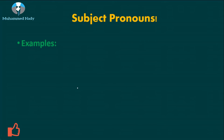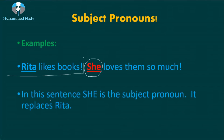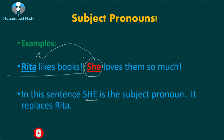Let's have a look at some examples. 'Rita likes books. She loves them so much.' As you can see, 'she' starts a new sentence, so it is a subject pronoun. In this sentence, 'she' is the subject pronoun — it replaces 'Rita.' So instead of repeating the noun or proper noun, we use the subject pronoun.